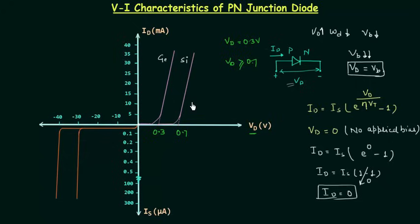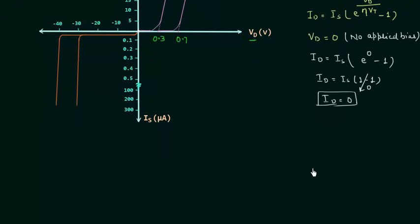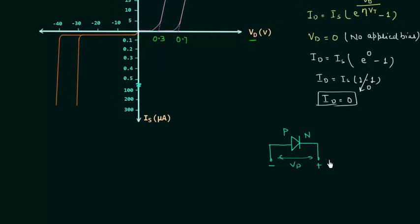Now we will move to the reverse bias condition. In reverse bias, the positive terminal of the battery is connected to the N side and the negative terminal to the P side. First I will make the circuit. This is the symbol of the diode. We connect the P side to the negative potential and the N side to the positive potential. The voltage across the diode is Vd, and we use the equation Id = Is times (e raised to power Vd over eta Vt, minus 1).